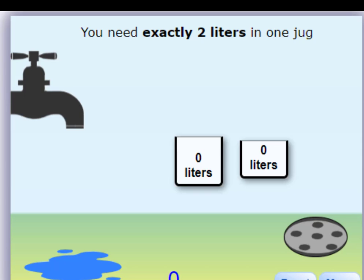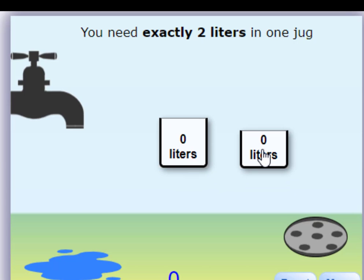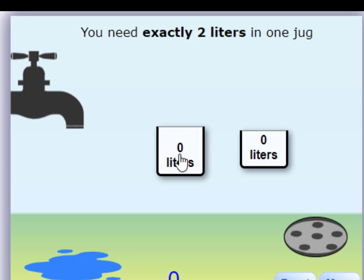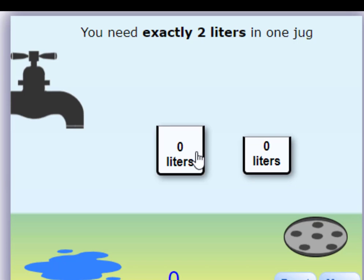Hello everyone, welcome to the AI Practical series. In this particular practical we'll be solving the water jug problem. We have a jug of four liters and another jug of three liters. There is a tap which can give us an infinite amount of water and a drain where we can pour water out. Our goal is to get exactly two liters.